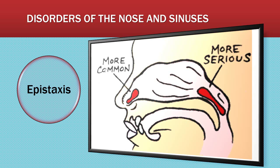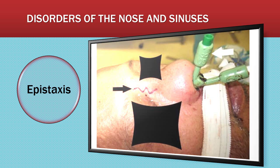So to summarize: anterior nasal bleeding is more common, while posterior nasal bleeding is more serious. This is a picture of a patient with an epistaxis catheter in place.